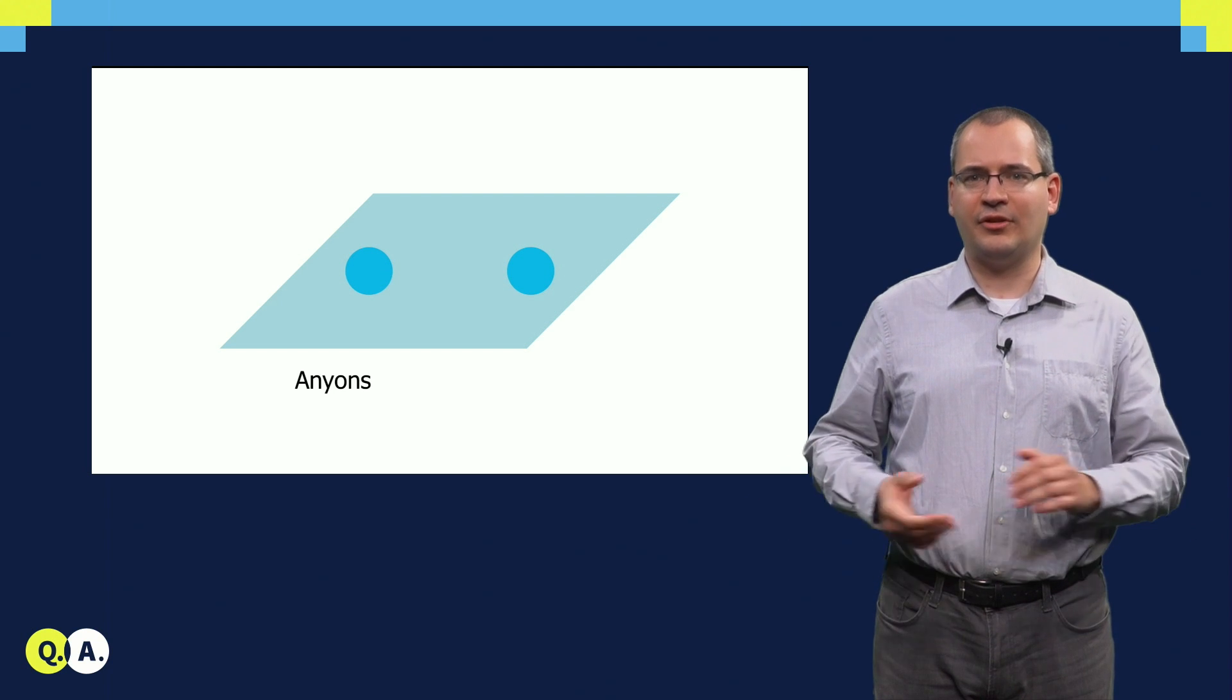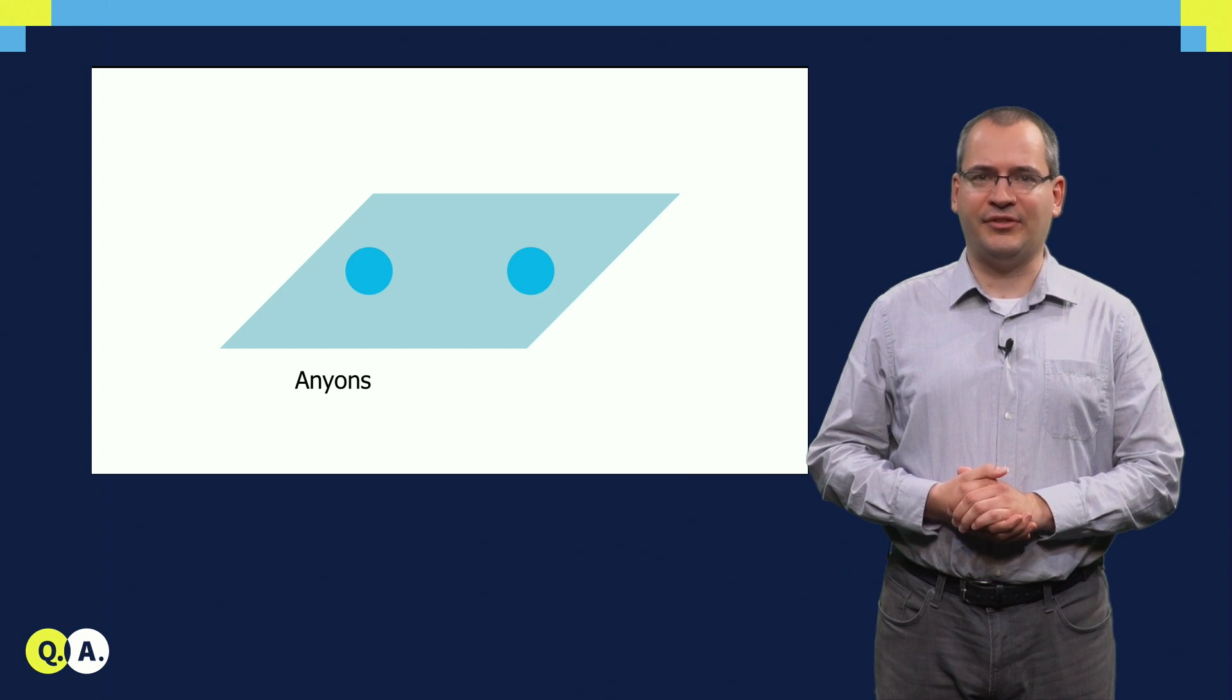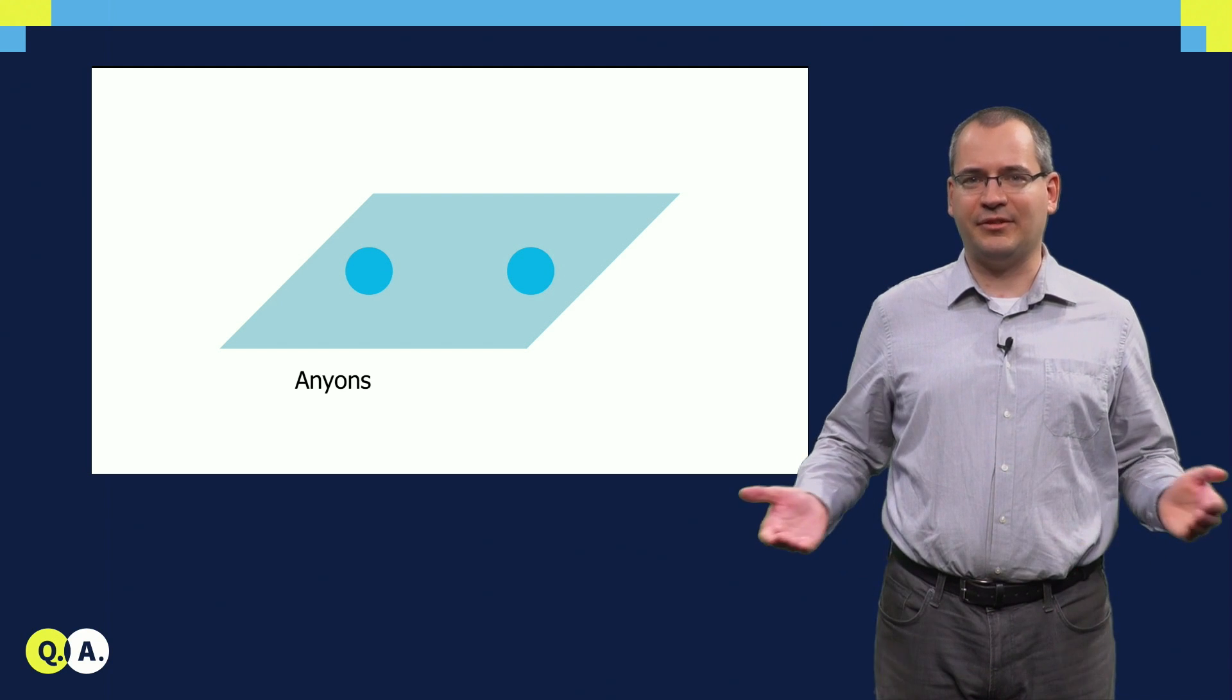In two dimensions, the alpha phase can be anything, and we have a different set of particles for every alpha. These particles are called anyons.